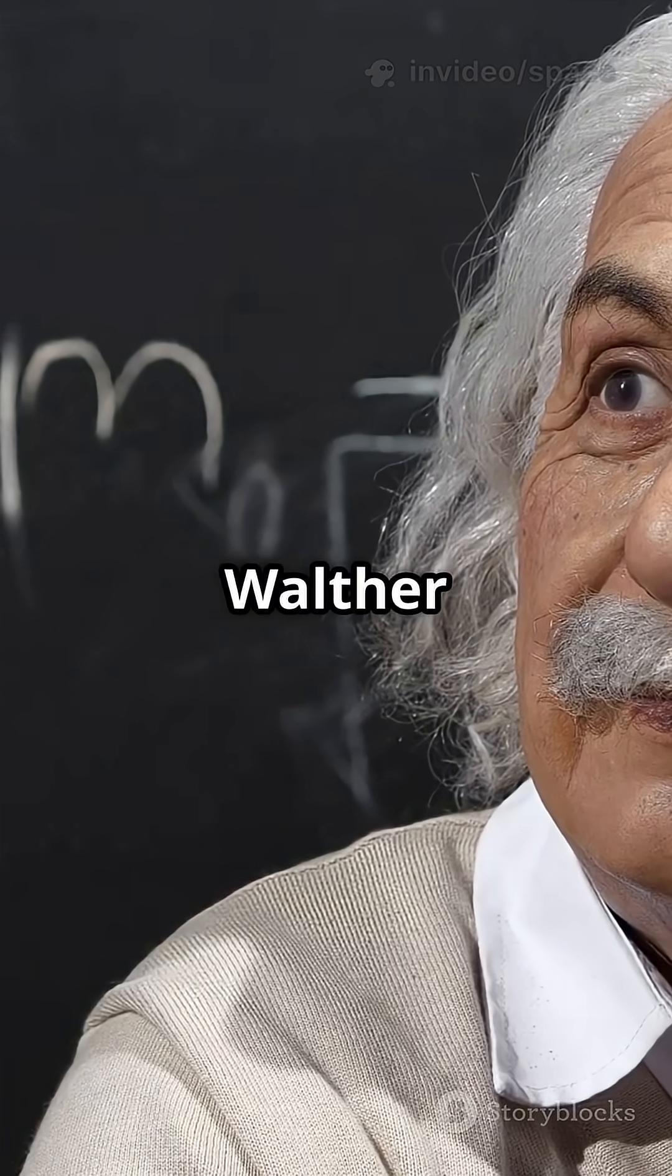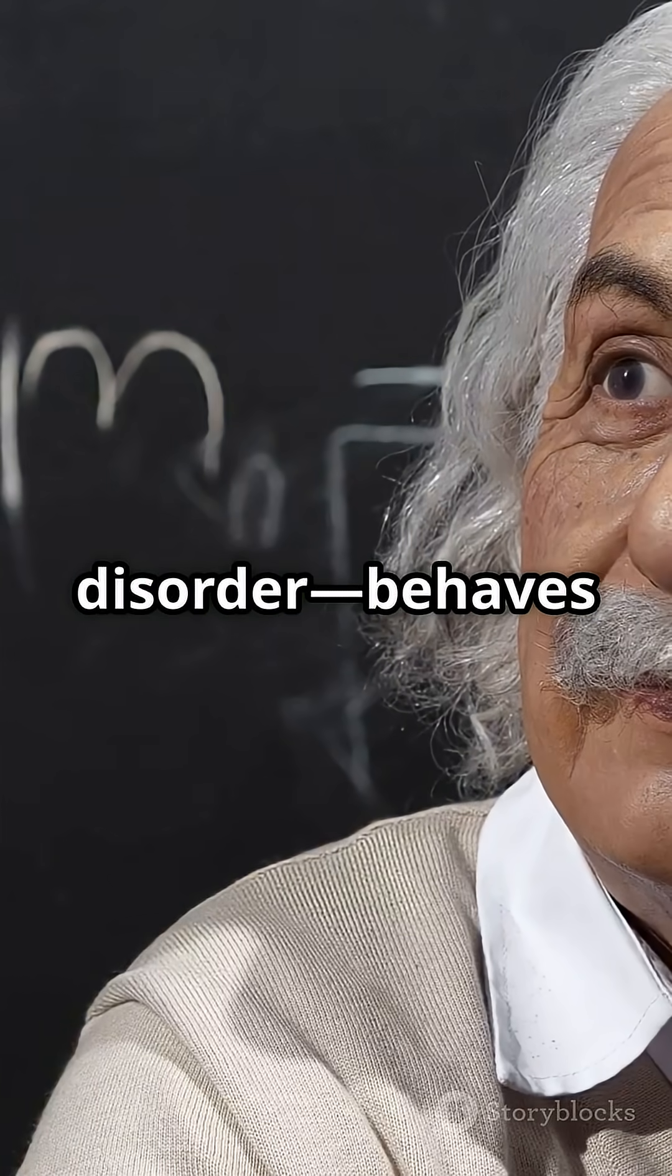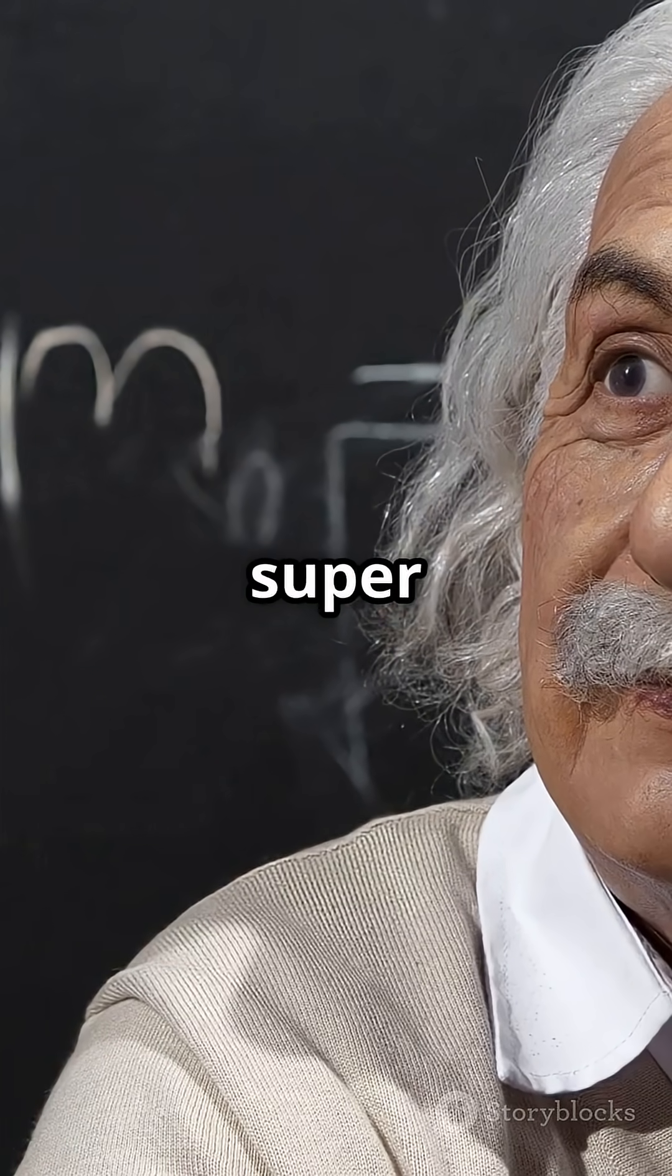Back in the early 1900s, Walter Nernst noticed something weird about how entropy, basically disorder, behaves as things get super cold.